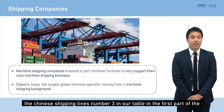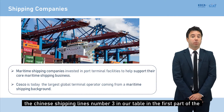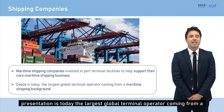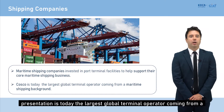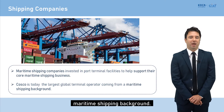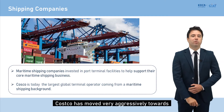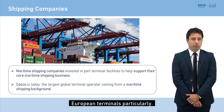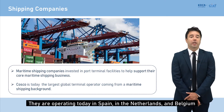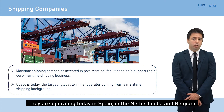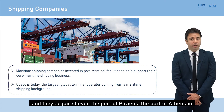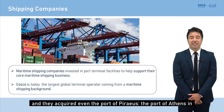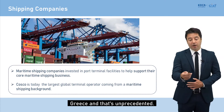COSCO, the Chinese shipping line ranked number three in the first part of our presentation, is today the largest global terminal operator coming from a maritime shipping background. COSCO has moved very aggressively toward European terminals particularly — operating today in Spain, the Netherlands, and Belgium — and they even acquired the Port of Piraeus, the Port of Athens in Greece, which is unprecedented.